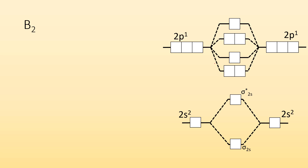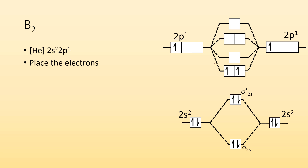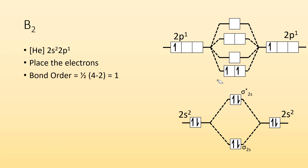Let's take a look at B2, the boron molecule. You can ignore the first energy level electrons, create the molecular orbital diagram, and place the electrons. Boron is 2s2, 2p1. Place the electrons, remembering that degenerate orbitals get one electron each before pairing. The bond order is 1: we have 4 bonding electrons and 2 anti-bonding electrons, so one half of 4 minus 2 gives 1.